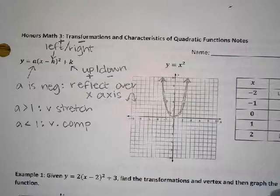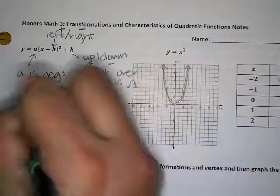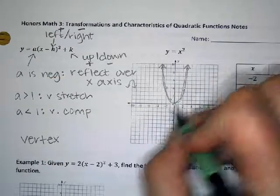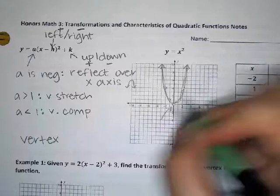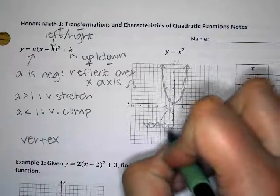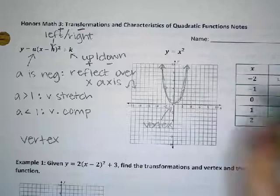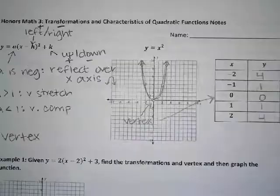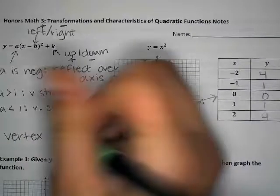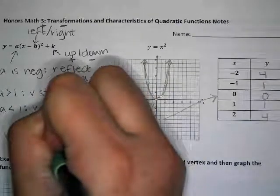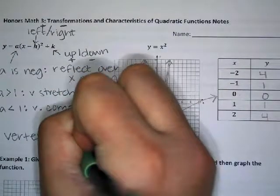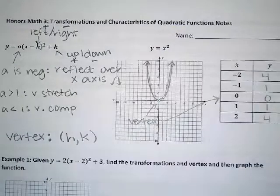The last thing we usually ask for is the vertex. The vertex is this bottom point right here — for the parent function it is the point (0, 0). If you have transformations happening to the graph, the vertex would be (H, K), and we'll practice finding that in the problems.